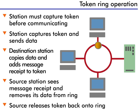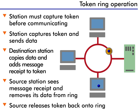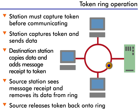Token Ring's access method requires users to get permission before they transmit. This permission comes in the form of a token. A token is a small packet of data that constantly circles the ring. When a user needs to send traffic, it must first capture the token.